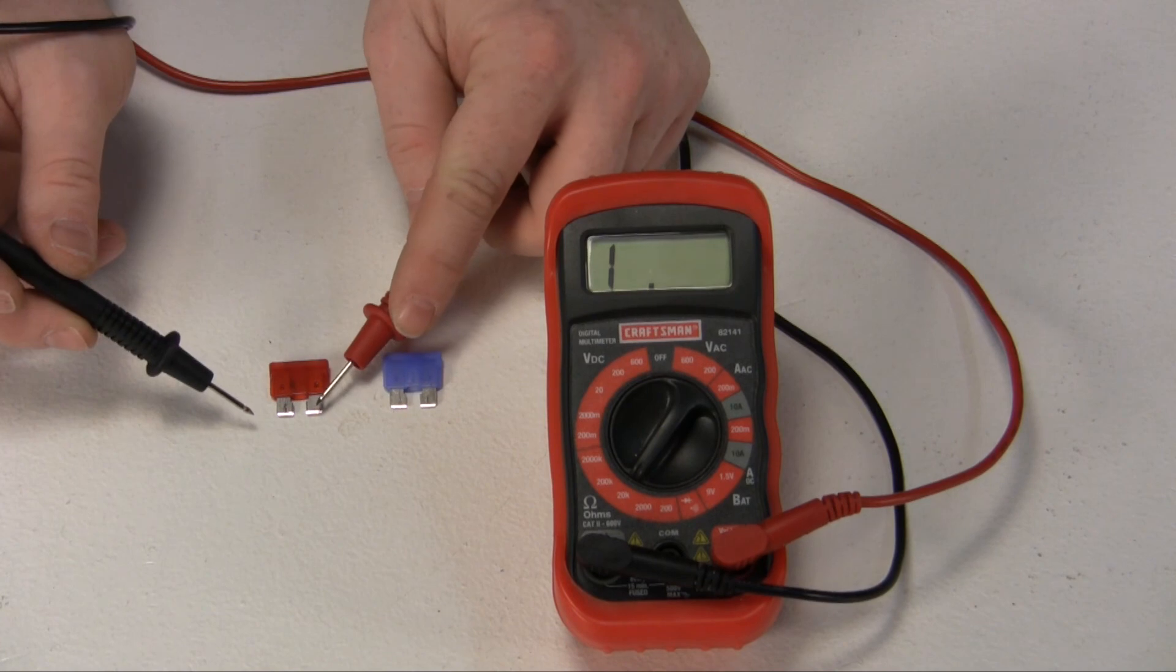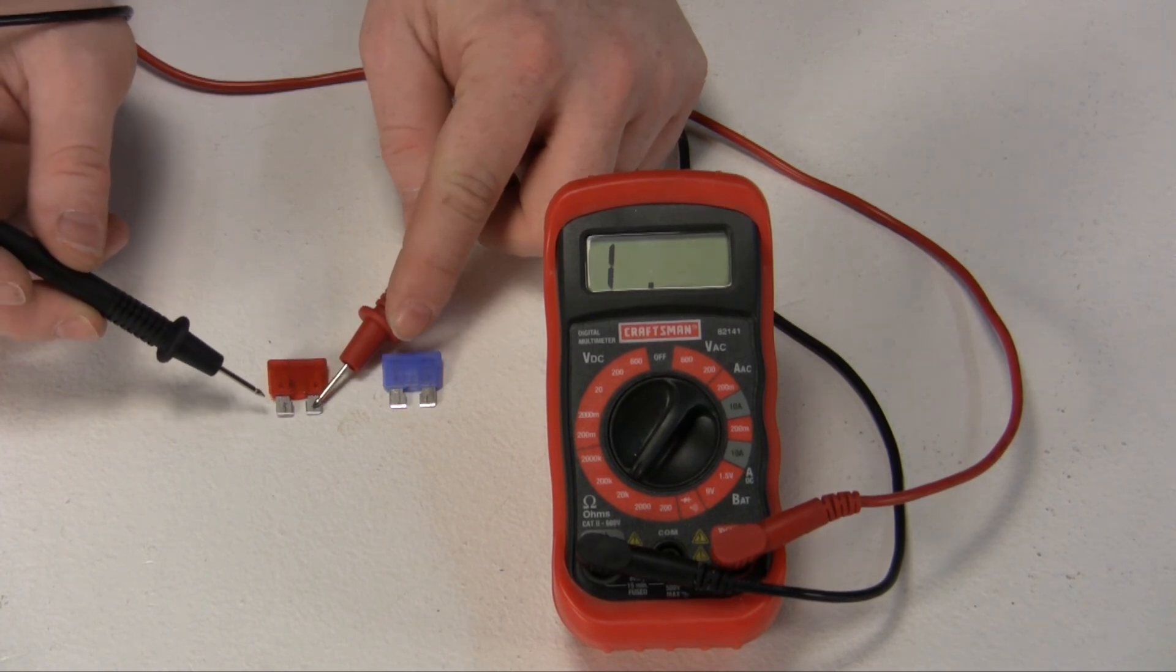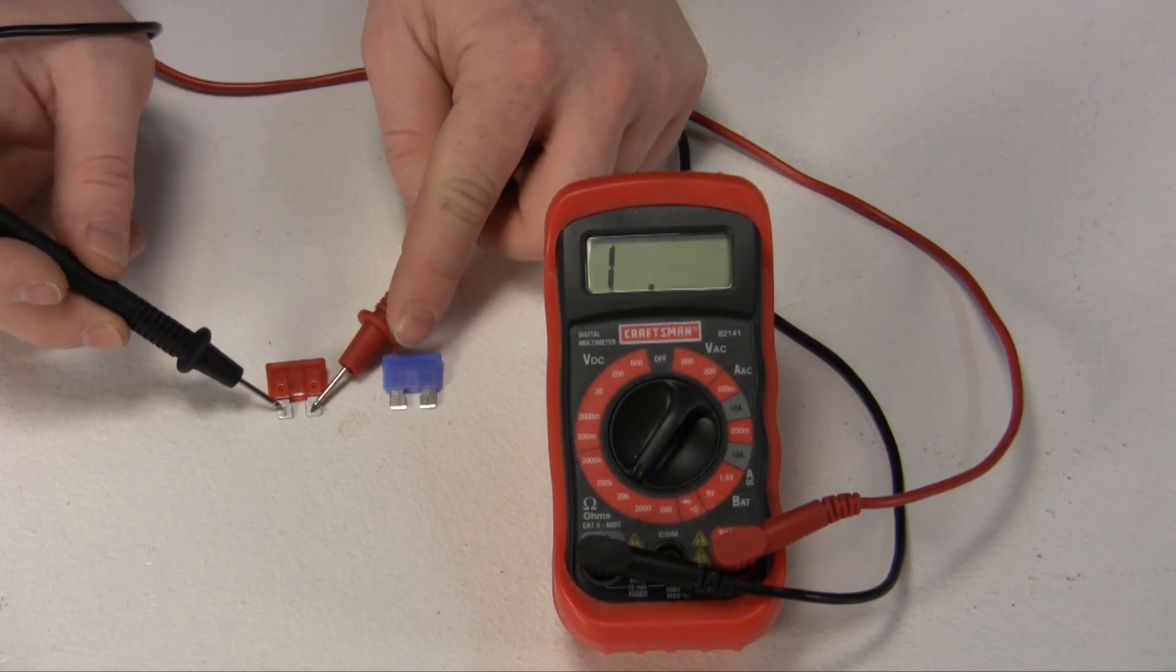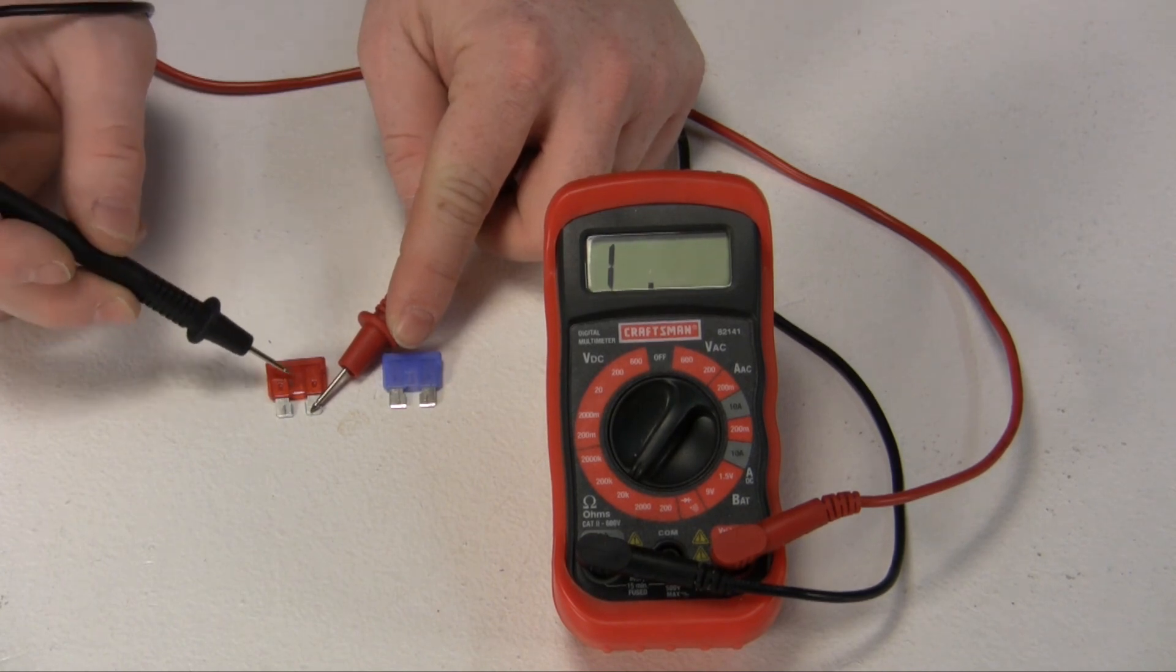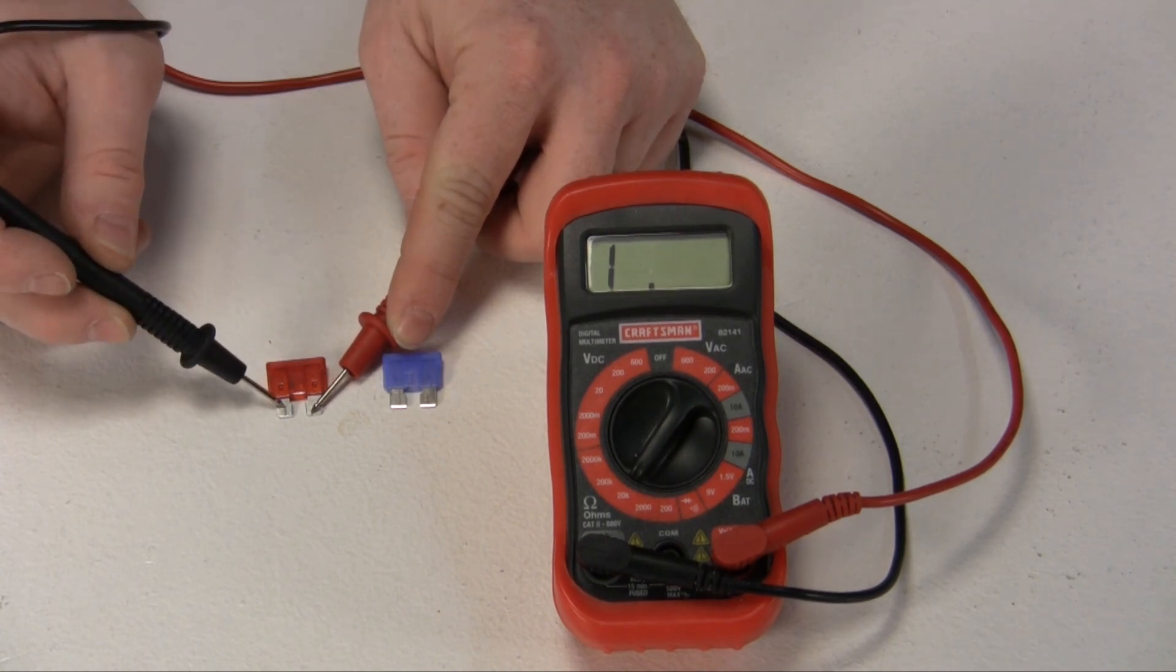The next fuse, we're going to check it the same way. Red lead on one side, black lead on the other. And the meter is showing that there's an open. We know that this fuse is blown and it's no good.